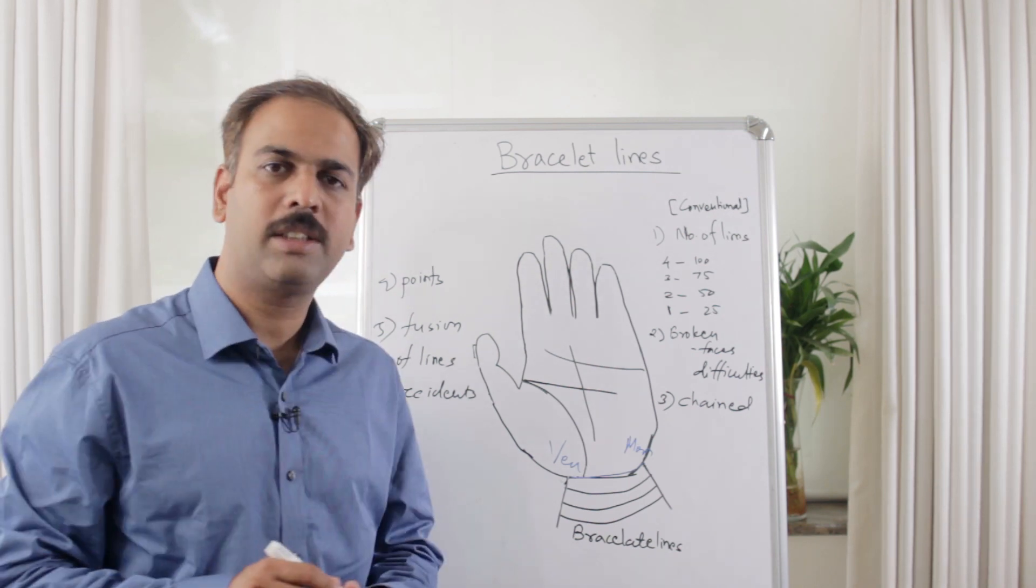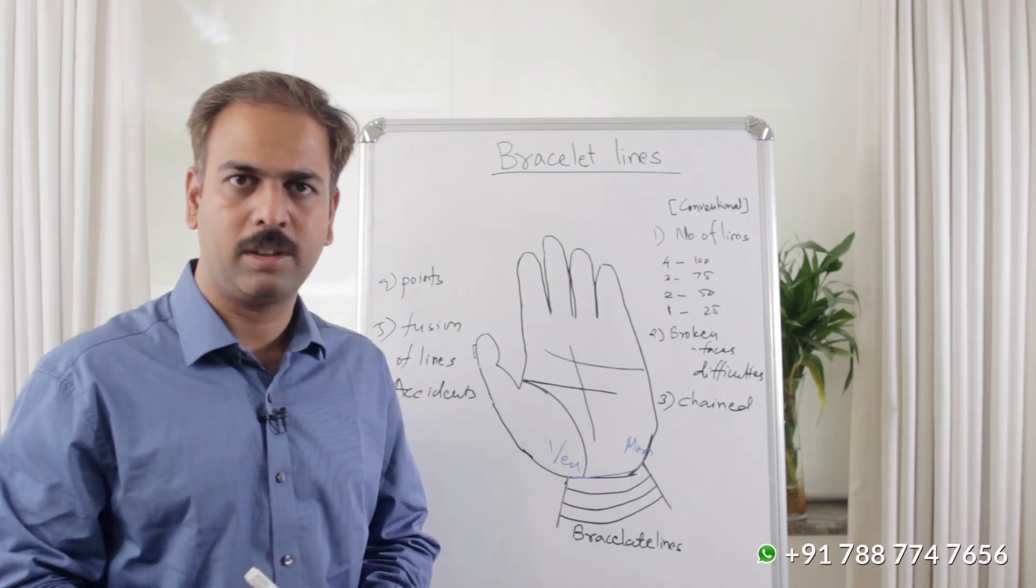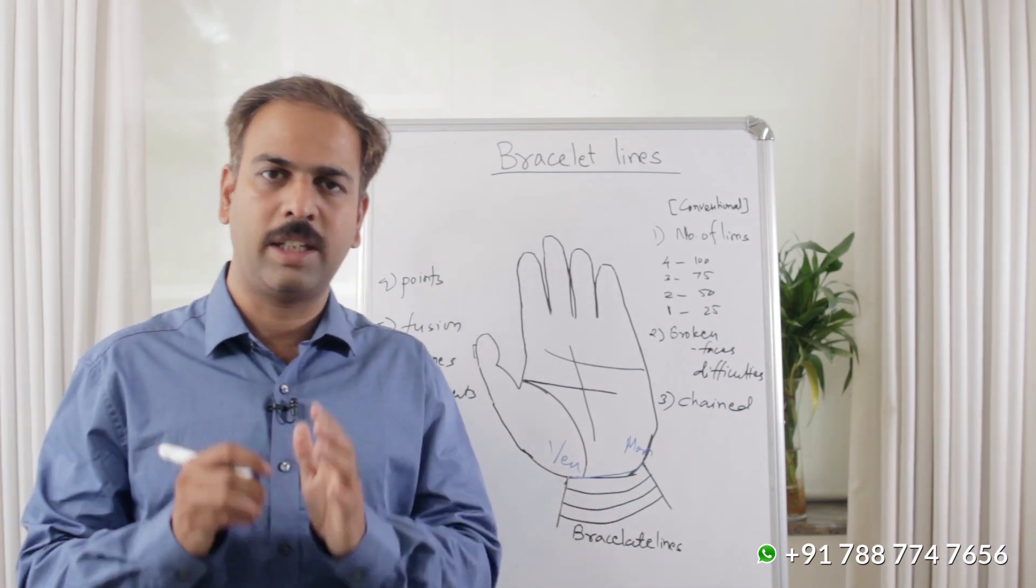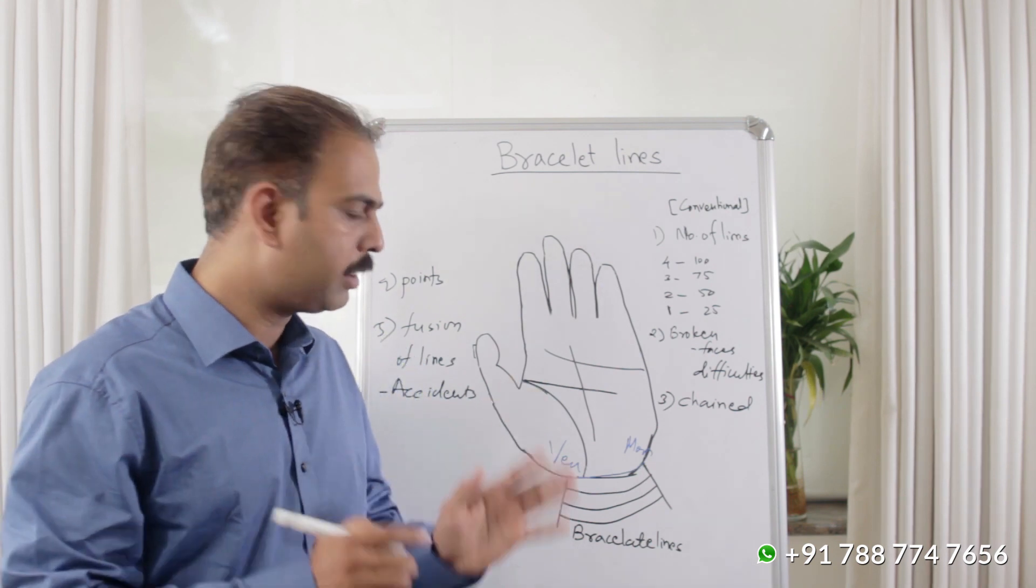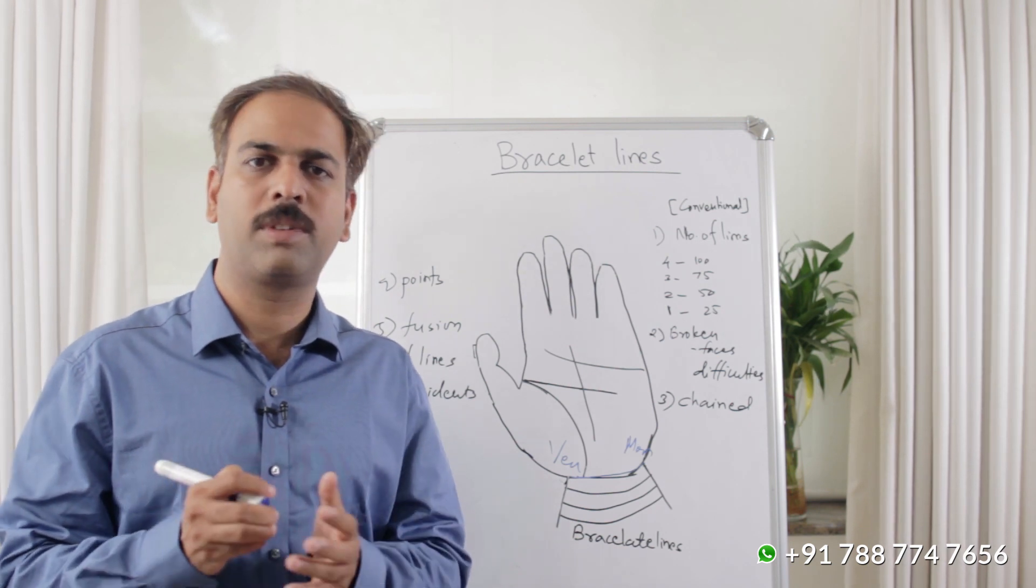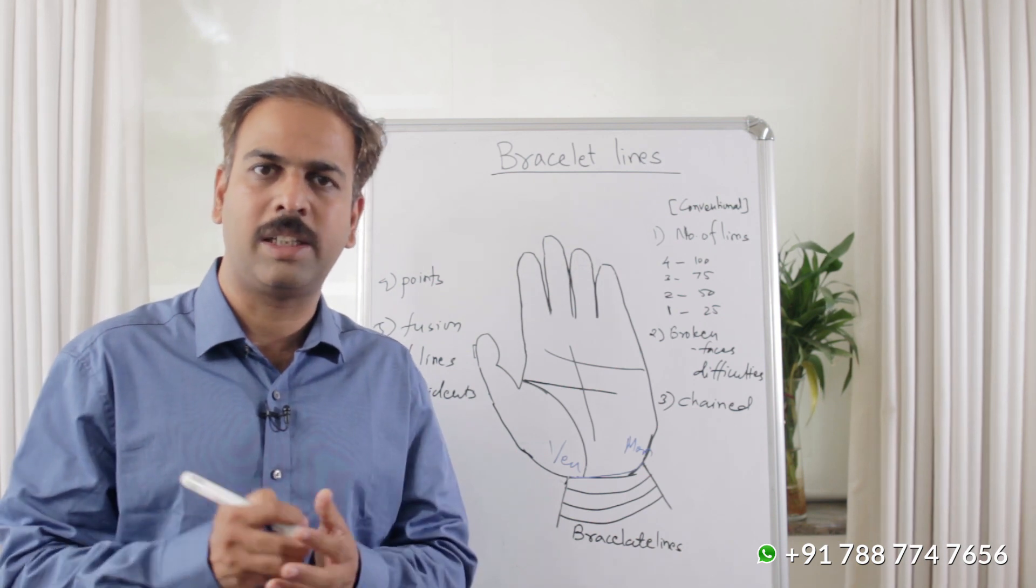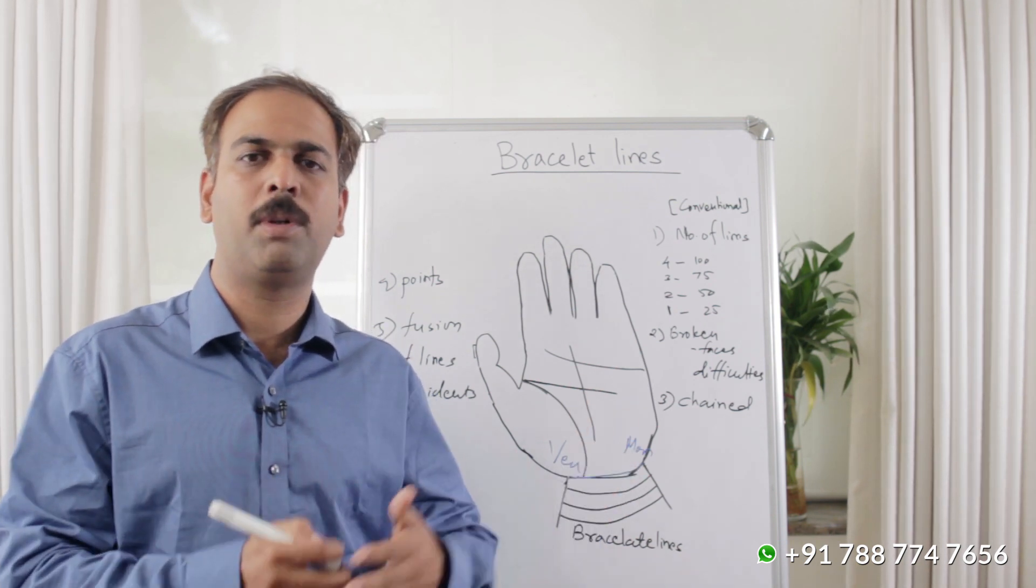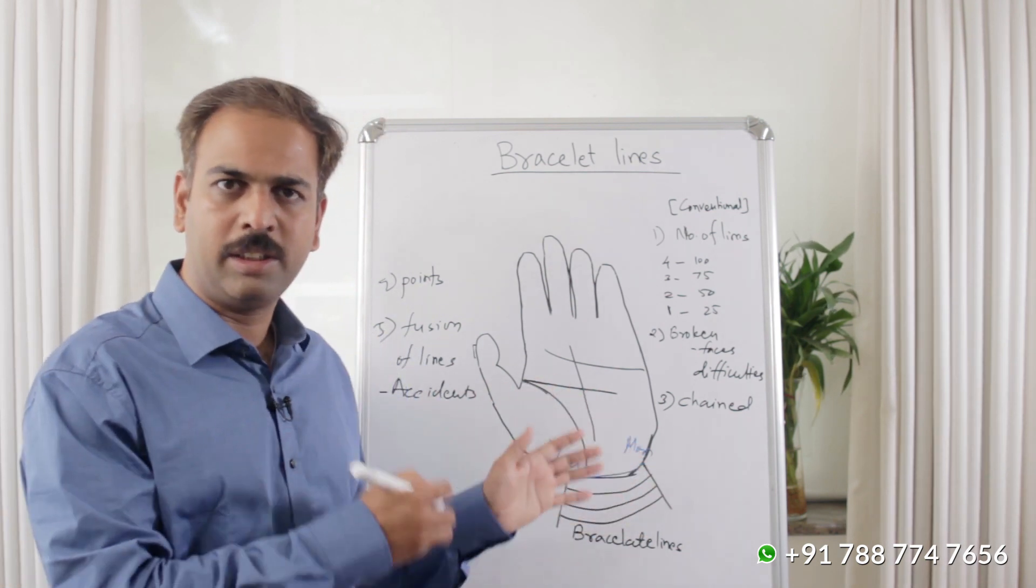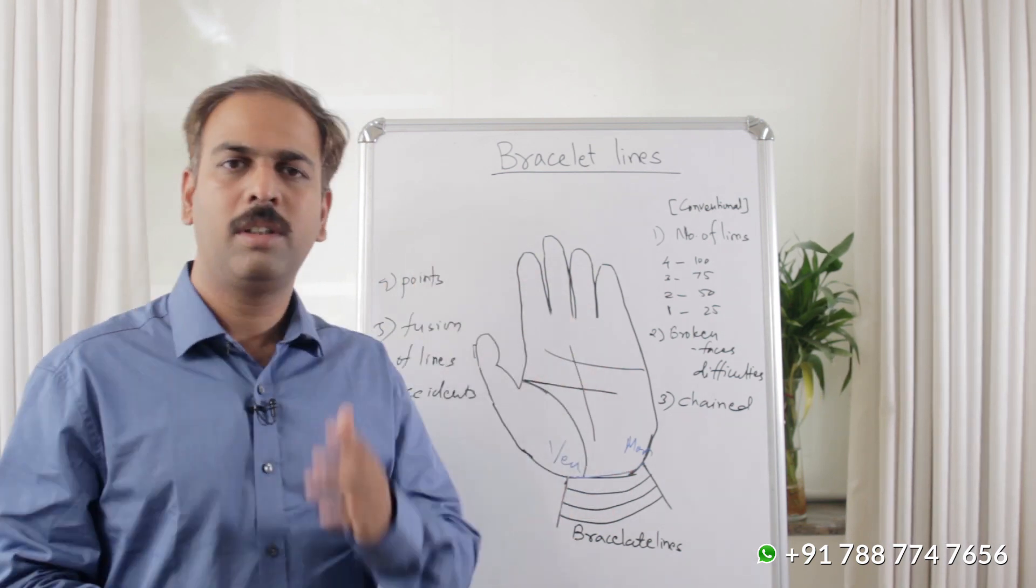The bracelet lines have a lot of conventional meaning. In the past, the bracelet lines have been taken to understand the life and longevity of that person. But I've seen a lot of cases who don't have any bracelet lines or single, but their age is about 80-85. So, the research should be done in this case. But I'm going to tell you some conventional meanings about the bracelet lines.